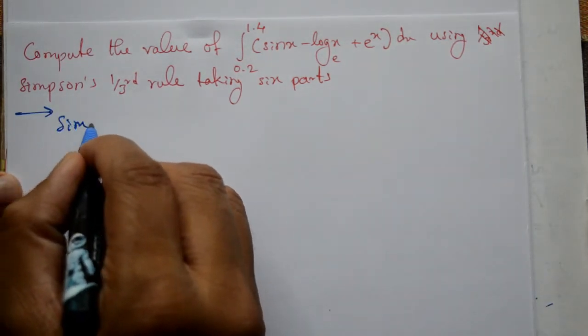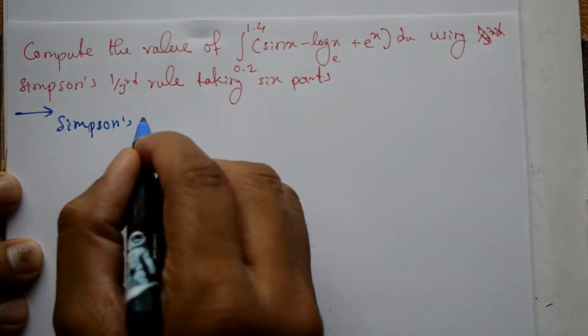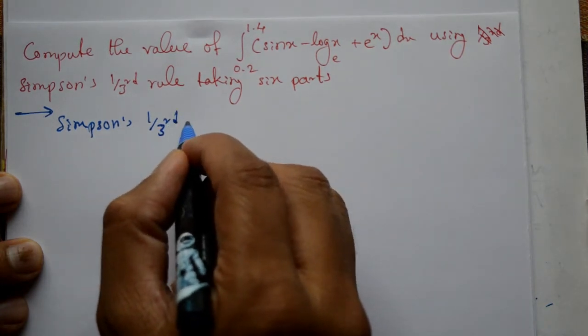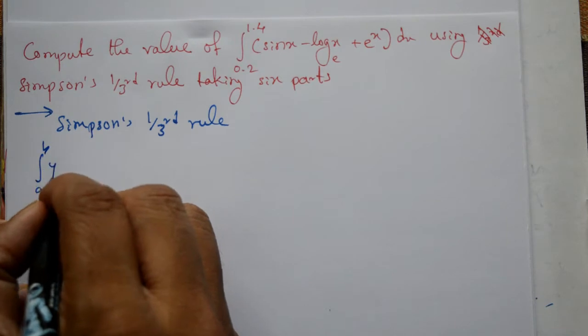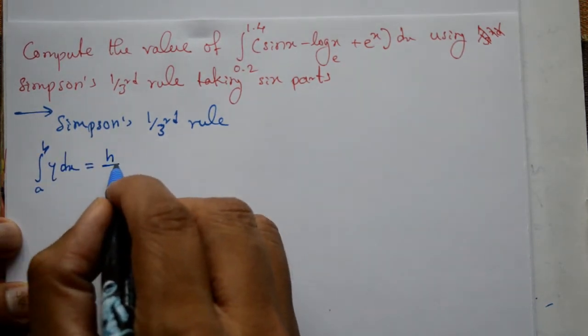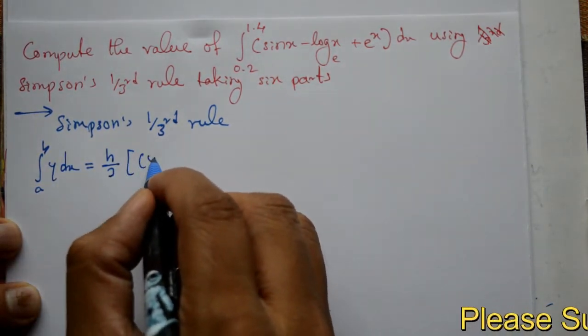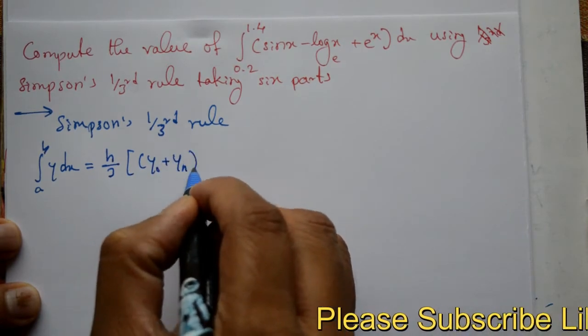First, the formula. Now Simpson's one third rule. The rule is integration of a to b y dx equals h by 3 into y naught plus y n, the first value and last value,